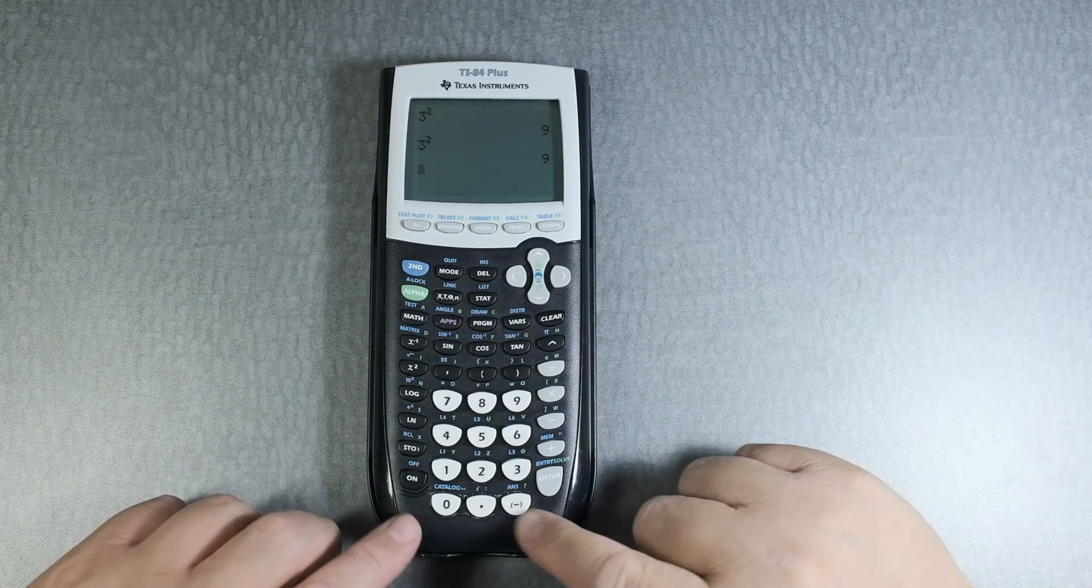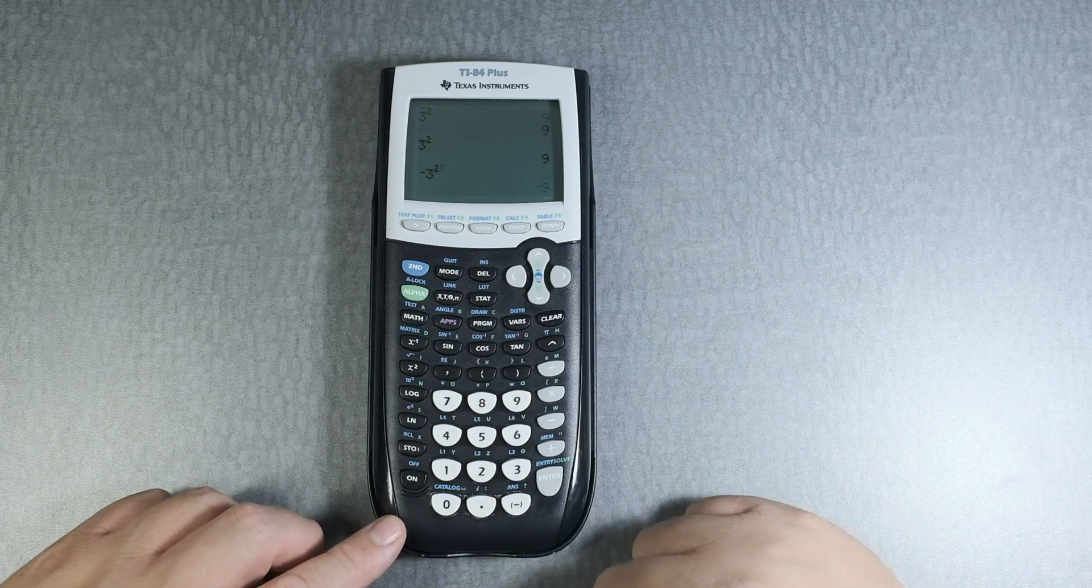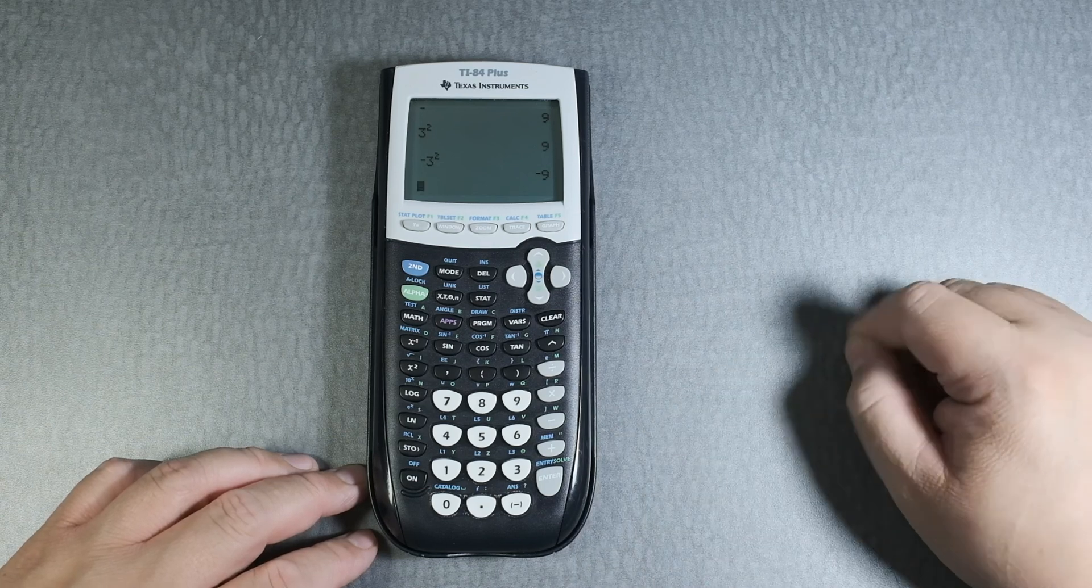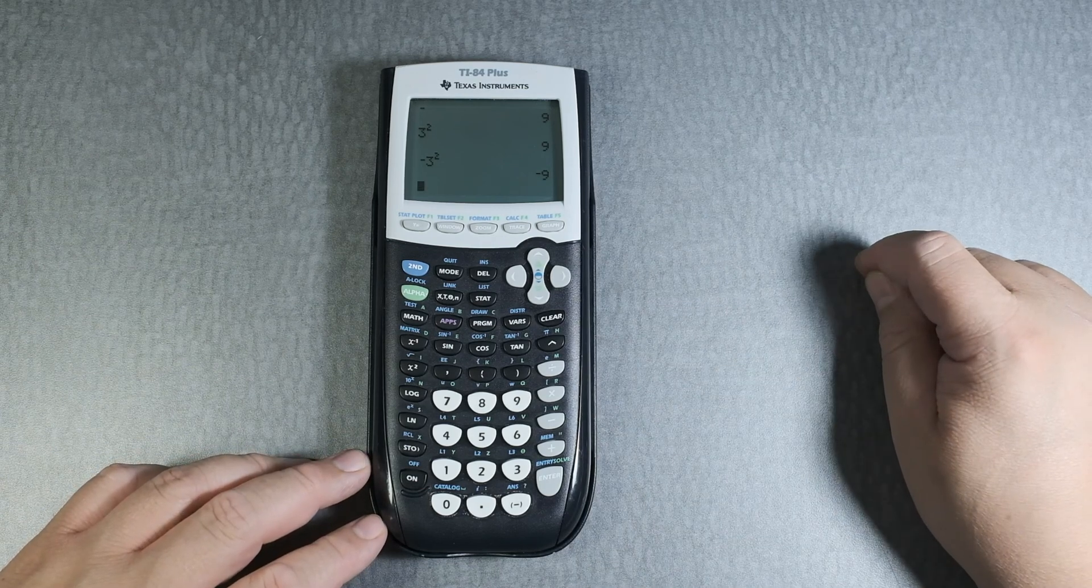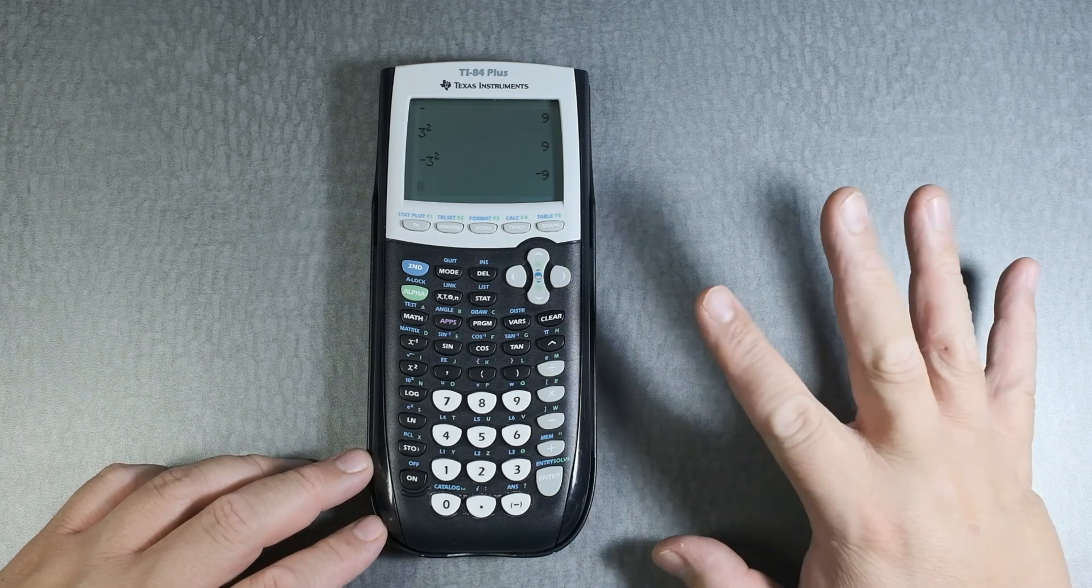Okay, but what about negative 3 squared? What happens then? It gives you negative 9. You would think negative 3 times negative 3 would give you positive 9, but in this case, it's an algebraic calculator.